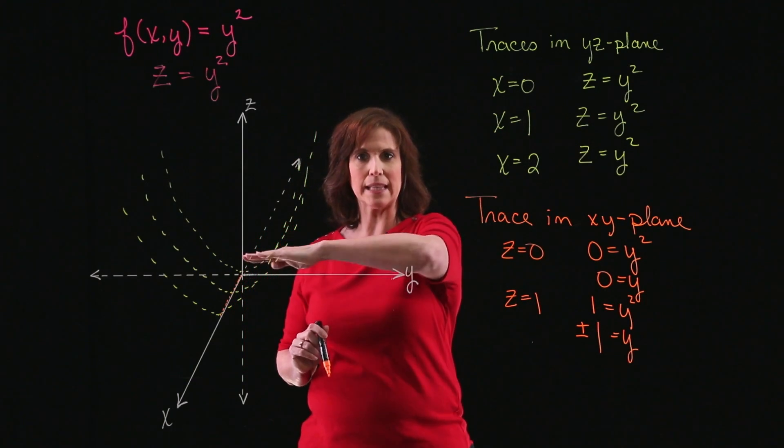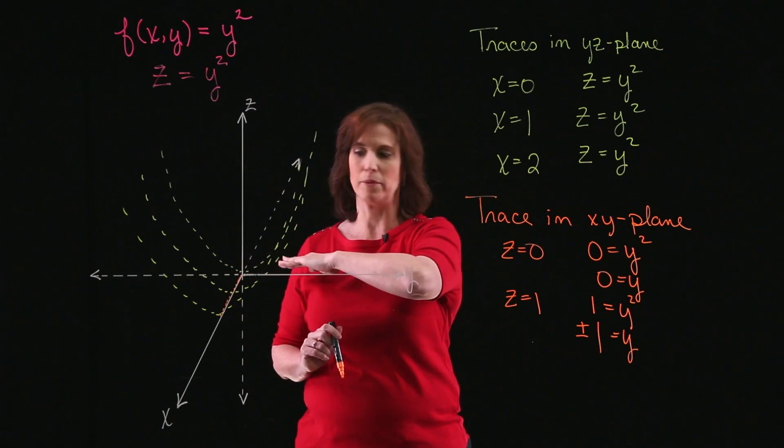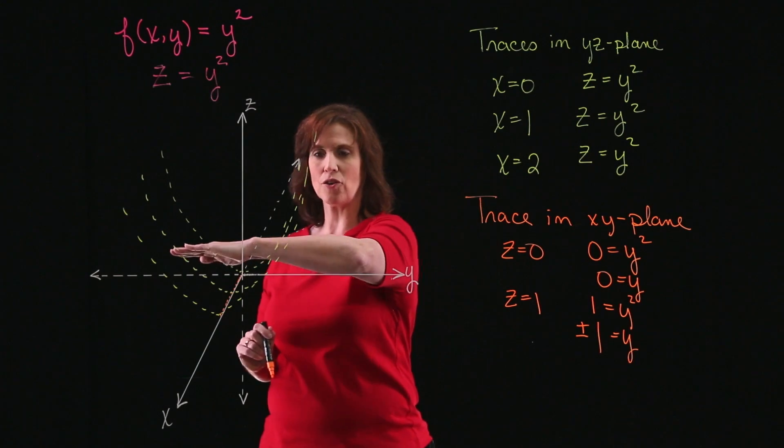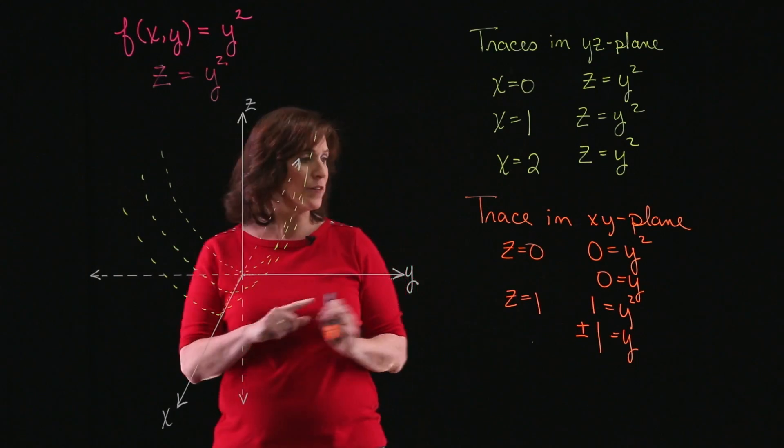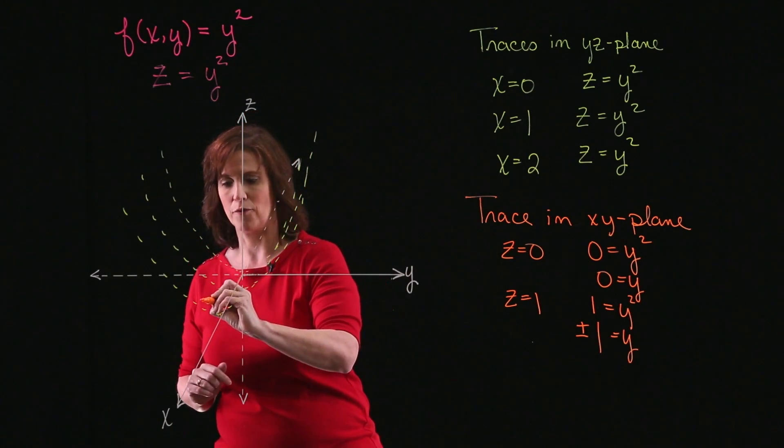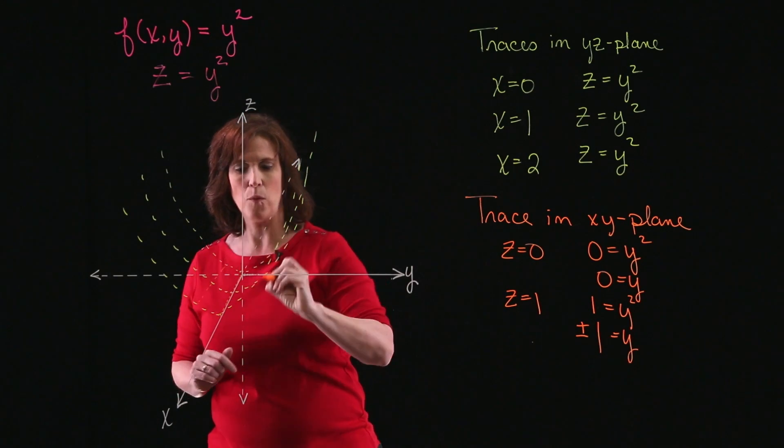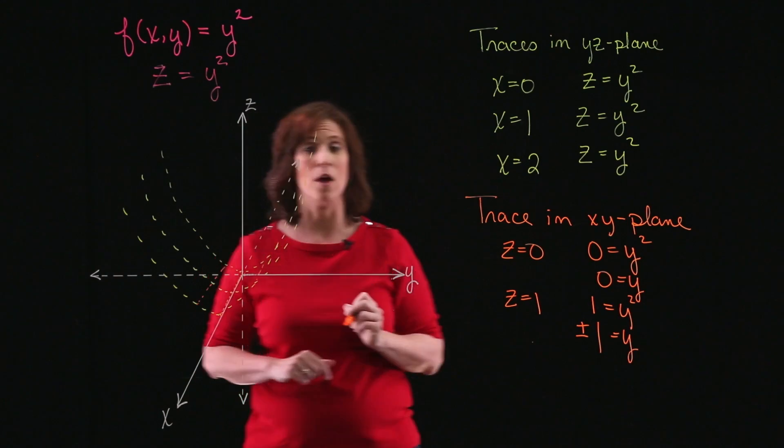Again, think of what I'm doing. I'm taking a slice that's parallel to the xy-plane. And if I slice this across, I'm going to end up with two lines, one of them when y equals negative 1, which will be over here, and one when y is positive 1, which is going to be over there.